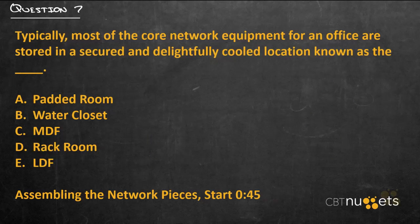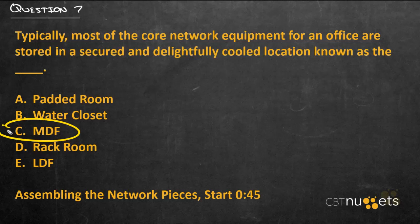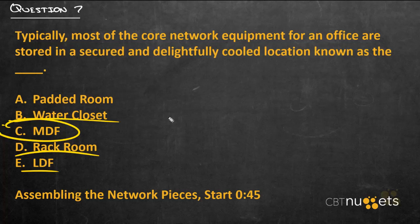Question number seven: typically, most of the core network equipment for an office is stored in a secured and delightfully cooled location known as the... The answer is C — the main distribution facility, or MDF. The LDF doesn't really exist, and a rack room is a descriptive name but not what people usually call it. I've seen many networks stored in a water closet, but they're not supposed to be there.